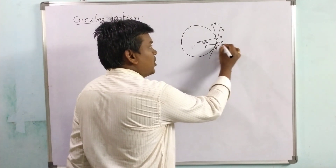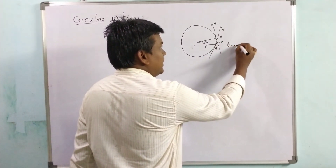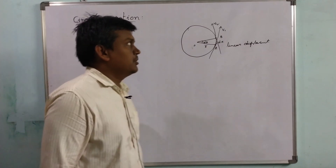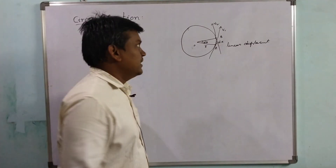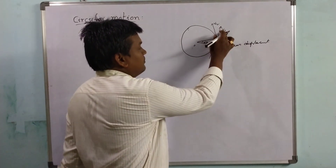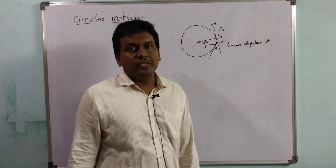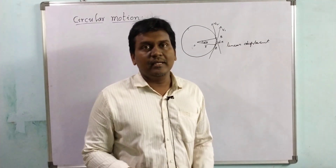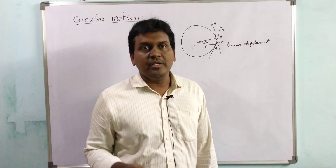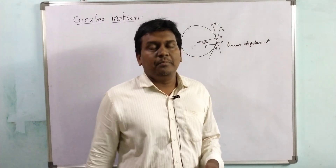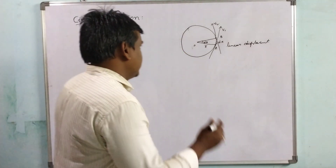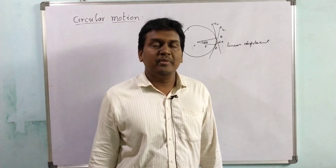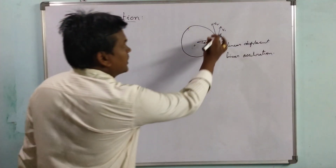The particle makes a small linear displacement dx. There is a velocity vector V1 and a velocity vector V2, so the velocity of the particle is changing. Change in velocity per unit time is called acceleration, so the particle exhibits some acceleration. This acceleration is also a linear acceleration.